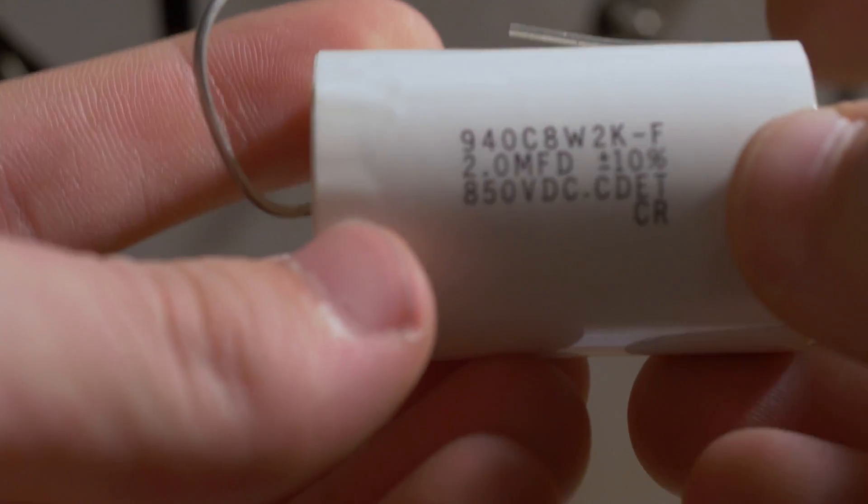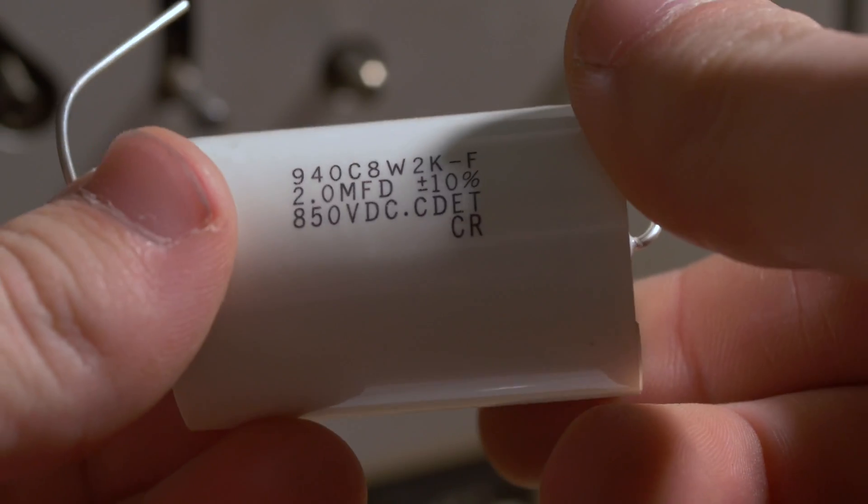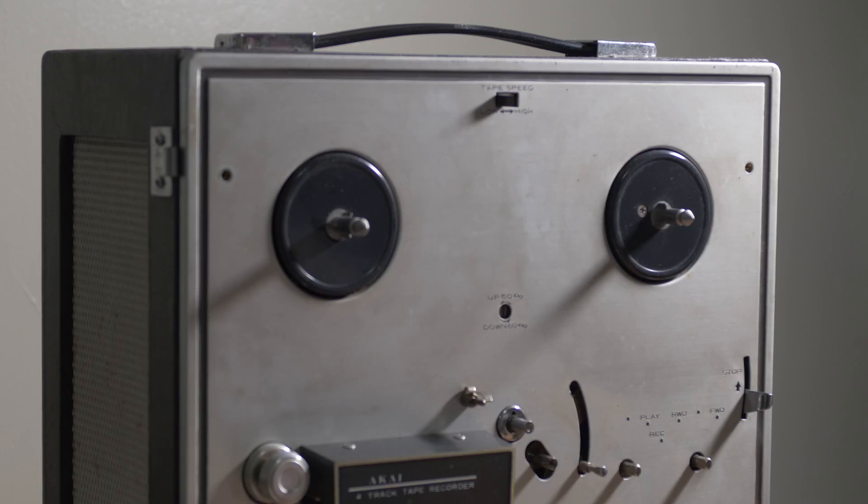This one is 2 microfarad like the original. It is rated for 850 volts DC, and while it is larger than the original one, I plan to either modify the mount or just leave it in there without mounting it to the side of the motor, just zip tie it or something.